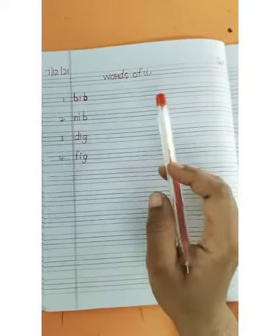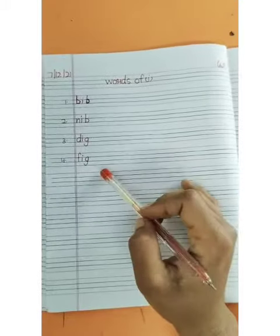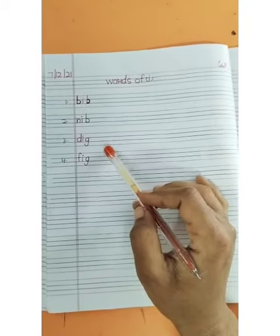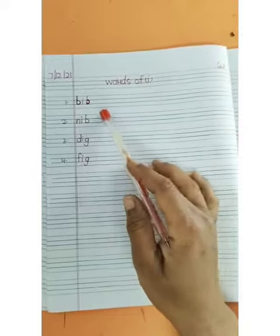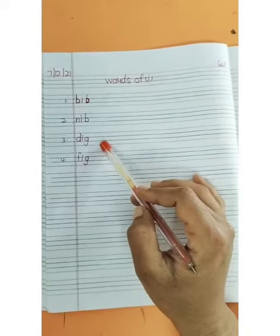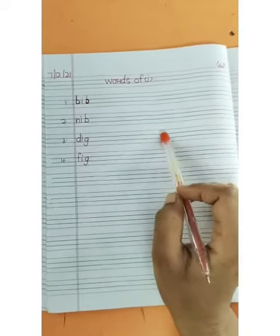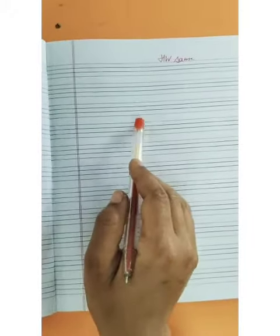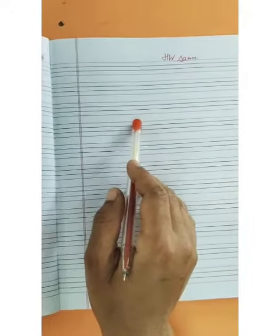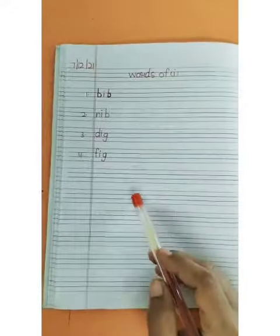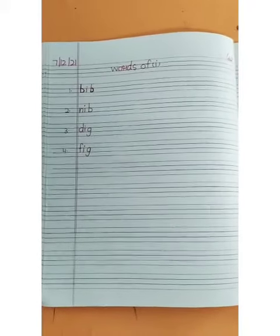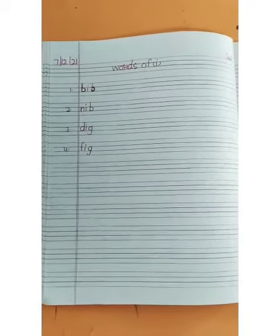So these four words you have to write on your notebook. Firstly mama will write, and the second time you have to write. On the next page you have to do the same homework. This is our reference video for online and offline children. Do practice this. Thank you, have a nice day. Bye bye.